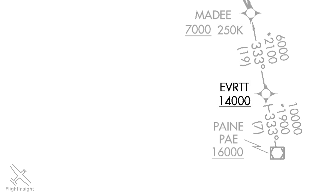From Evert, we stay on the 333 degree course to MADI, to cross that at or above 7,000. There's also a speed restriction of 250 knots here — the bar above it represents a maximum. Sometimes you'll hear ATC issue a descend via instruction and say something like, "delete speed restrictions," meaning the aircraft can fly whatever speed it likes as long as it adheres to other speed regulations in the FARs.